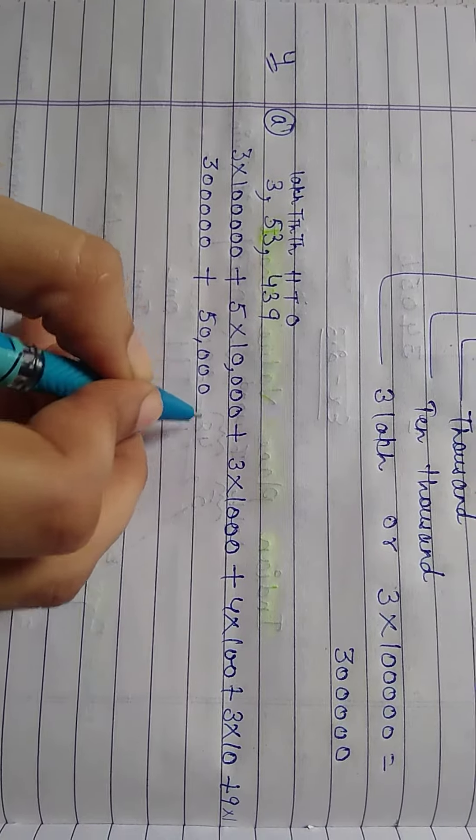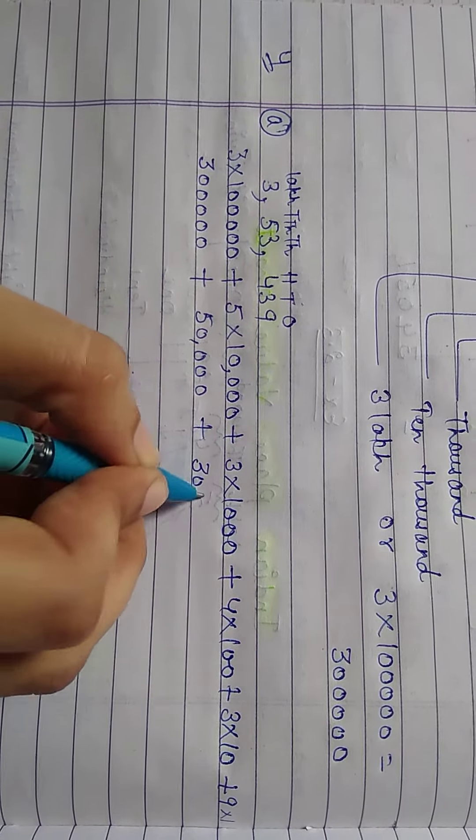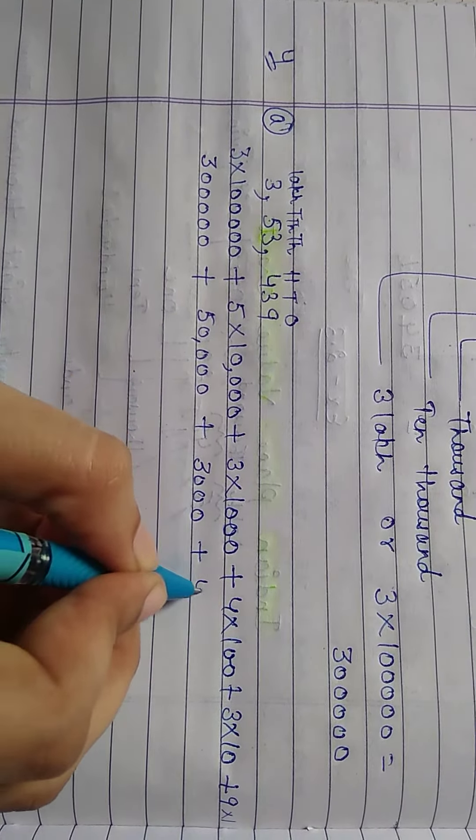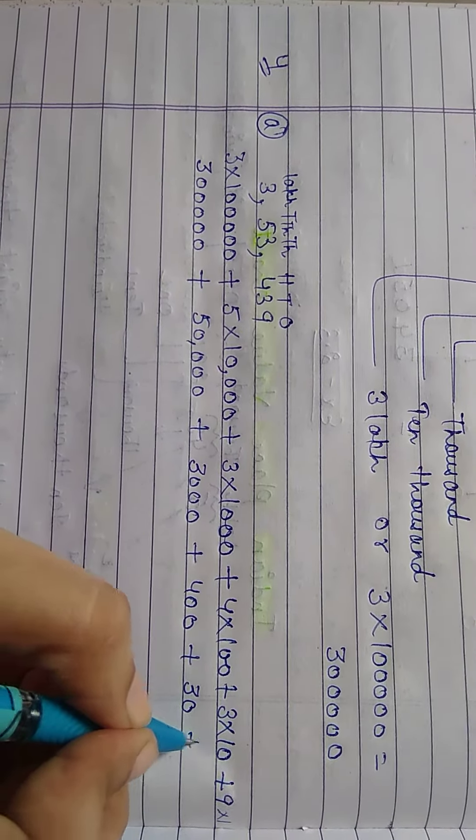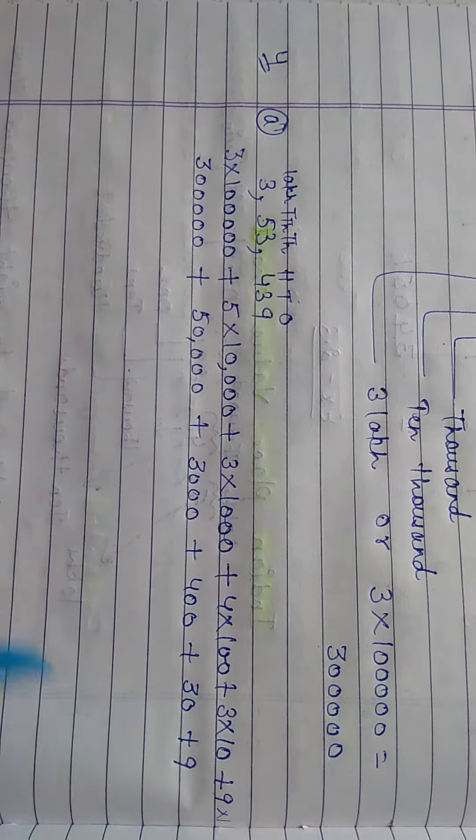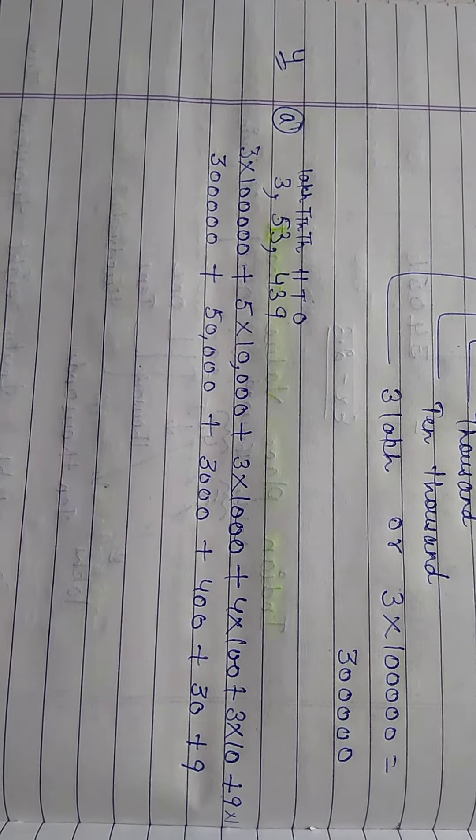Plus 50,000 plus 3,000 plus 400 plus 30 plus 9 ones. So this is the expanded form of the given numeral.